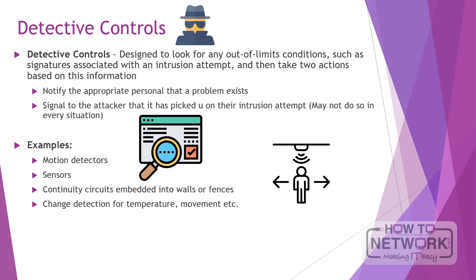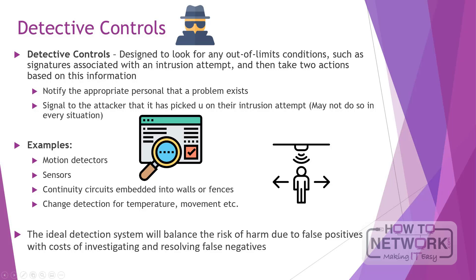These systems can also support change detection, which would cause an alert if, for example, the temperature of a room changes or if movement is detected. All detective systems are subject to error rates. The ideal detection system will balance the risk of harm due to false positives with the cost of investigating and resolving false negatives. The point in between these areas is known as the crossover point.